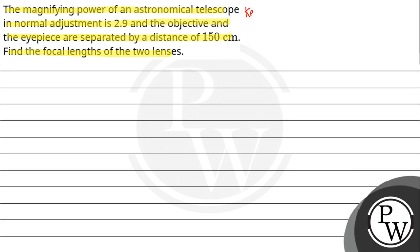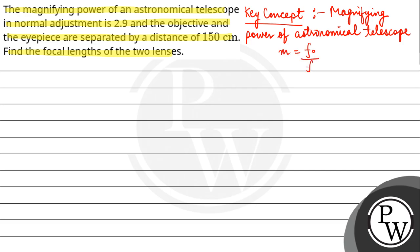So here our key concept is the magnifying power of an astronomical telescope, which is given by M equals F_o upon F_e if it is in normal adjustment.